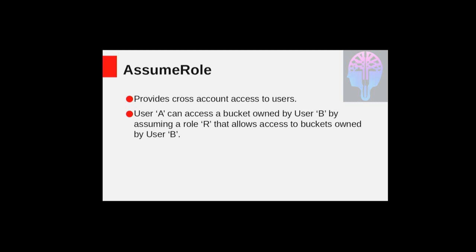Now I'll talk about a couple of STS APIs implemented in RGW. The first one is the Assume Role API, which is mainly for providing cross-account access to users. Let's say we have two users: user A and user B. User B has some buckets which user A wants to access temporarily. In this case, we can create a role R and attach a policy to it which will allow access to the buckets of user B. Then user A can simply assume role R, get back a set of temporary credentials, and start accessing user B's buckets.